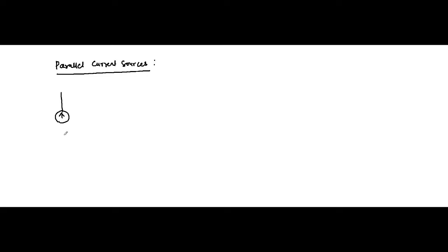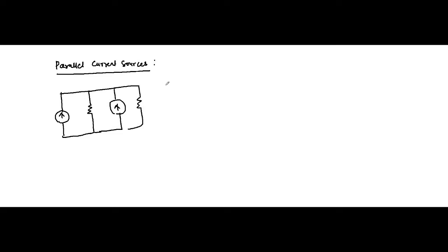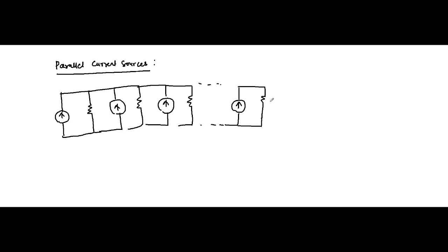We have a circuit like this, as we have already shown: a number of current sources connected in parallel with a resistor. That combination — a number of such combinations — we have. This is Rn, this is In, this is I3, this is R3, this is R2, this is I2, this is R1, this is I1. We have to determine the simplified equivalent circuit across these two terminals.